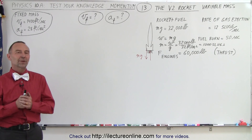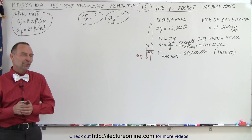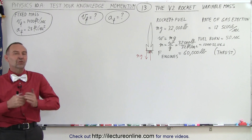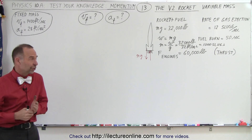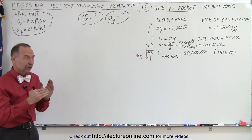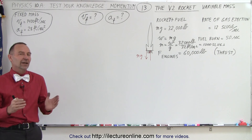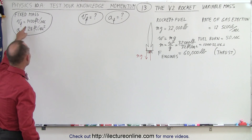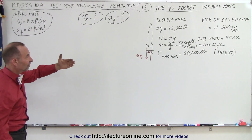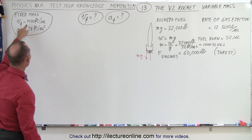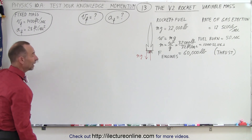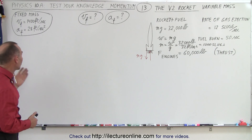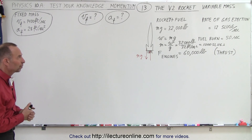Welcome to Electronline. In the previous video looking at the V2 rocket, we assumed that even though we were burning fuel, the weight of the rocket and fuel remained constant. Based upon that, we found that the final velocity after 50 seconds of burn was 1,400 feet per second, and it maintained a constant acceleration of 28 feet per second squared.